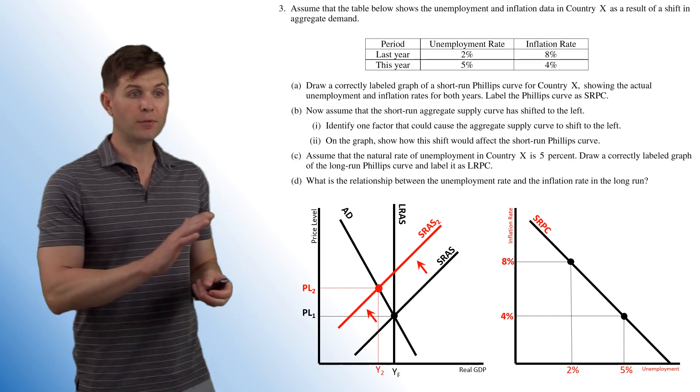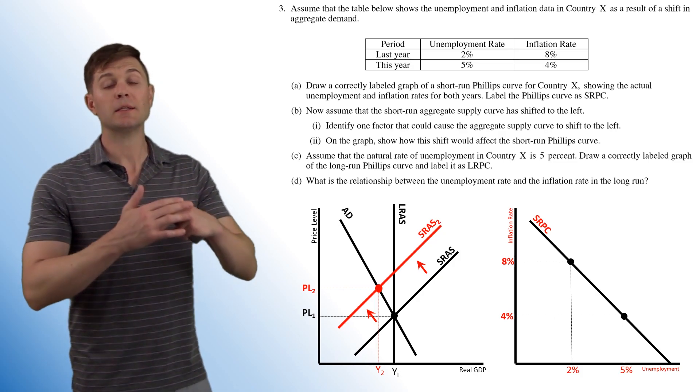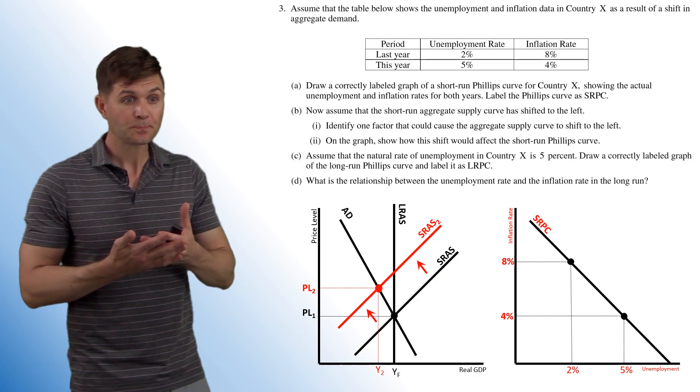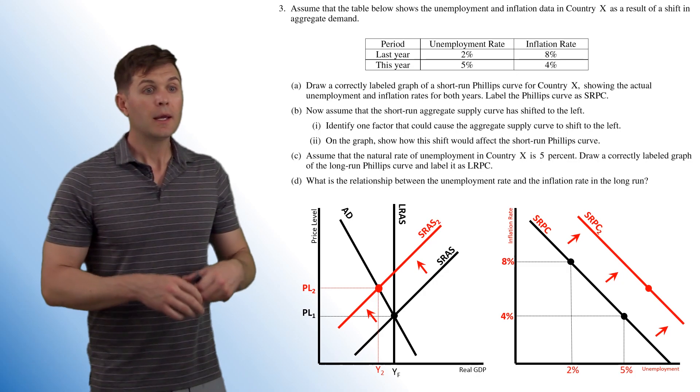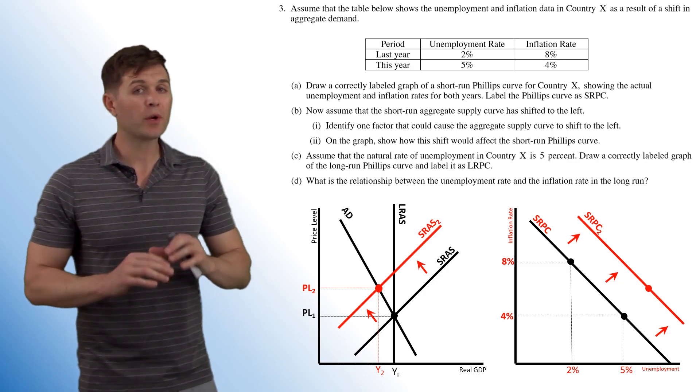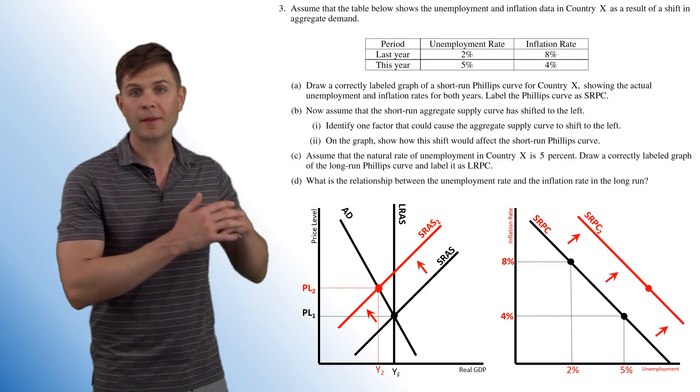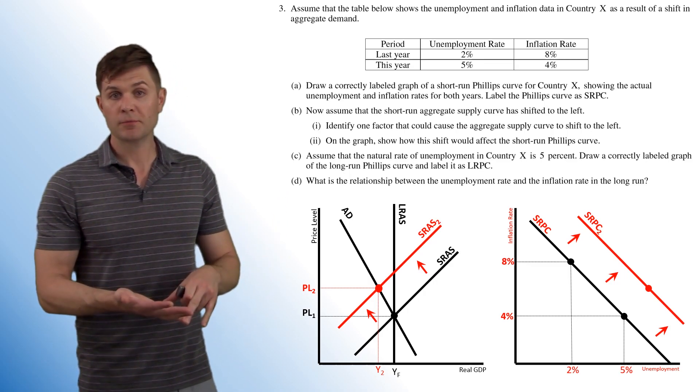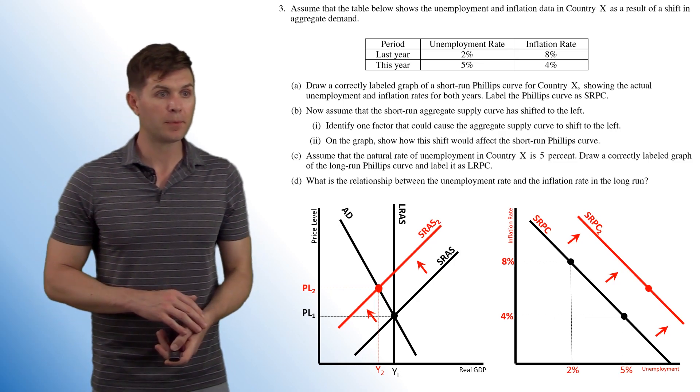So we're going to need to get to a point on the Phillips curve where we have a higher price level, higher inflation, but a higher unemployment rate. So what's going to happen is that short run Phillips curve is going to shift upward. And then you don't really have to draw the point, all that you really have to show on there is that the short run Phillips curve is going to shift upward and that's enough for the answer. I've kind of put a point on there showing that both the inflation rate and the unemployment rate would go up as well.